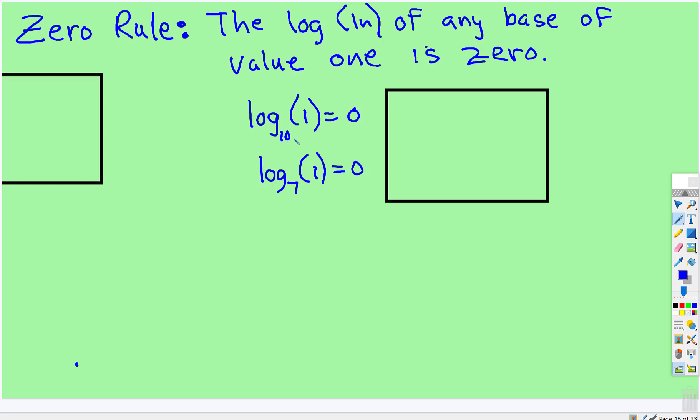Because remember, if we rewrite this as an exponential, here's the base, here's the n. So 10 to the zero, that's right, any non-zero number to the zero power is one. It doesn't matter what the base is.